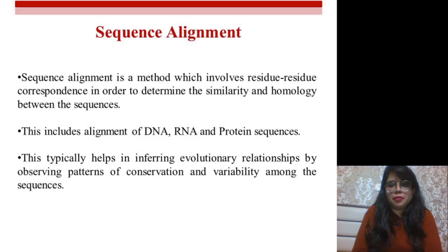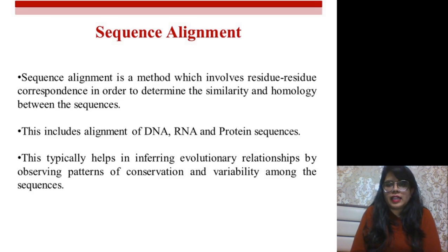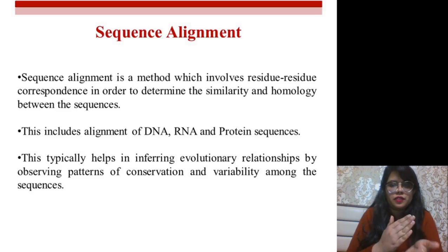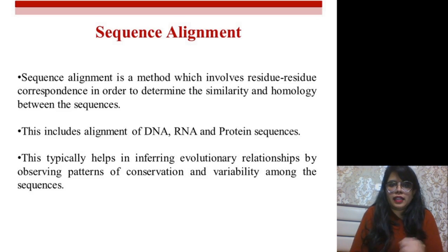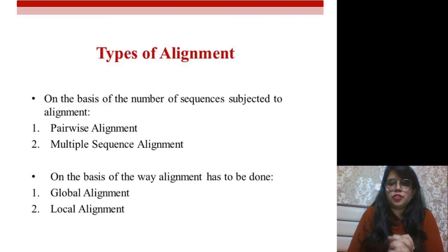Before going to the tool, we need to understand what sequence alignment means. You can align any kind of sequences — DNA sequences, RNA, or protein sequences. Aligning these sequences helps you infer the evolutionary relationships between different organisms. You can align your DNA sequence with another organism's DNA sequence and know the percentage of similarity between them. It is basically residue-to-residue alignment to determine similarity or homology between two sequences.